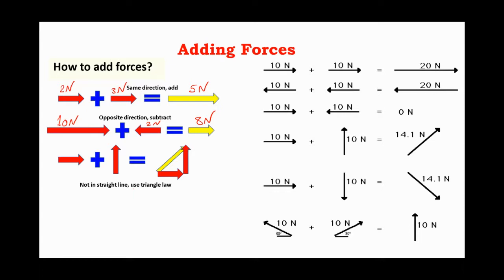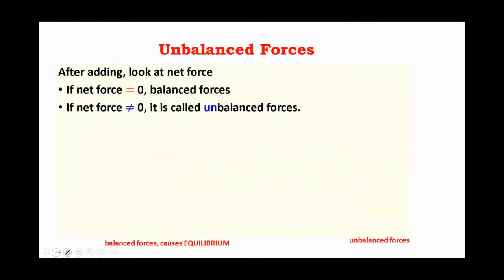What if we have two perpendicular forces? One of them is 3 Newton to the right and 4 Newton upward. We cannot simply add 3 plus 4. We need to complete a triangle. Using the Pythagorean rule, the net force will be 5 Newton — when the sides are 3 and 4, the hypotenuse is 5. That is how we add perpendicular forces together to get the net force.